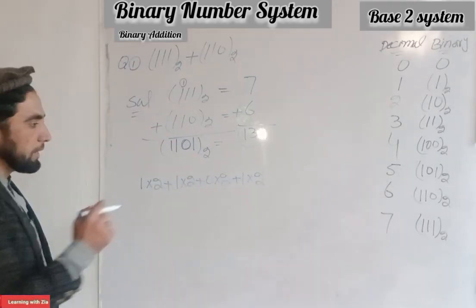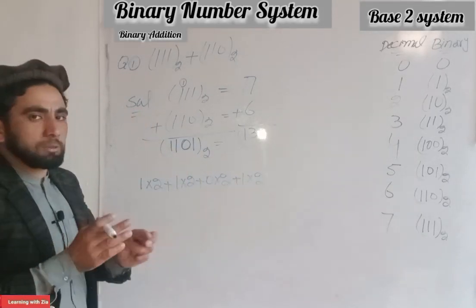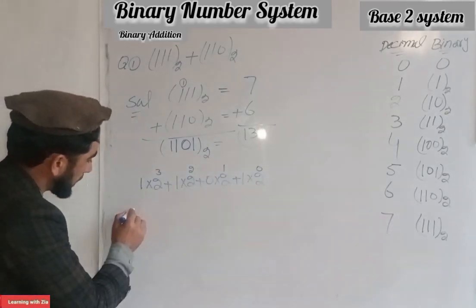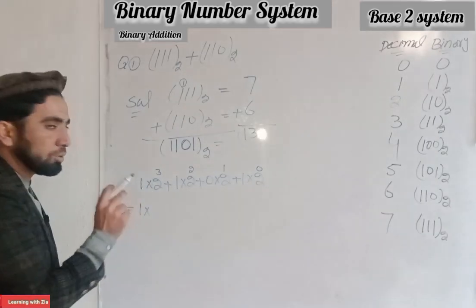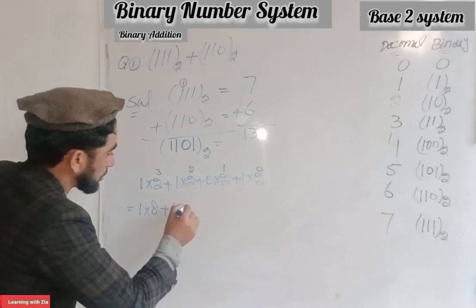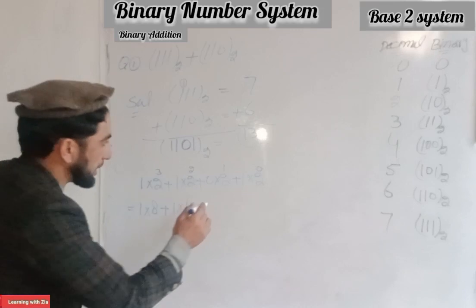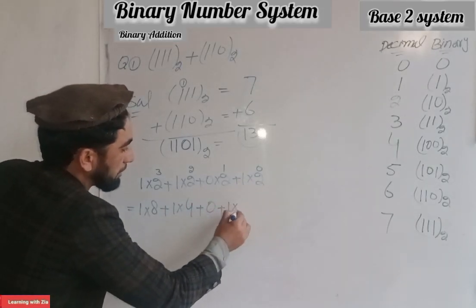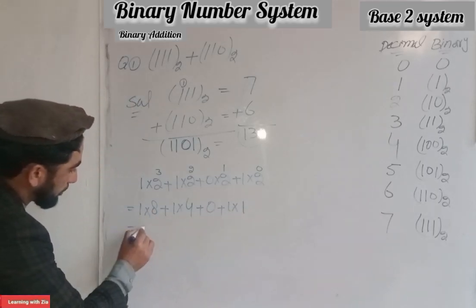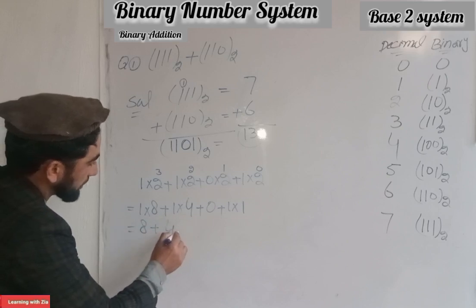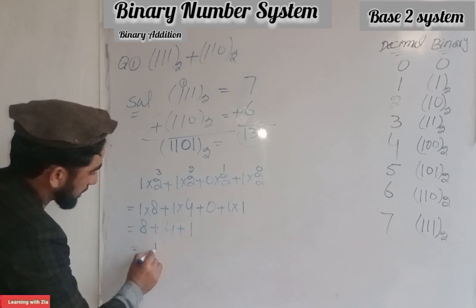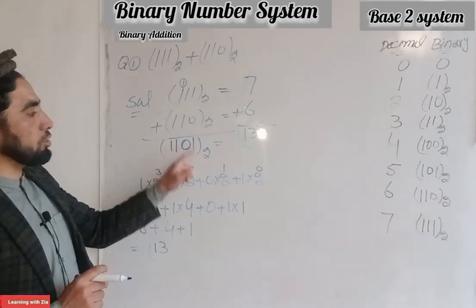The whole number: the right-side number is two to the exponent zero, and the number starts from there. So 1 multiplied by 2 to the 3rd is 8, plus 1 multiplied by 2 squared is 4, plus 0 multiplied by 2 which is 0, plus 1 multiplied by 2 to the exponent zero is 1. Eight plus four plus zero plus one equals 13. Exactly, 1101 in the decimal system is 13.